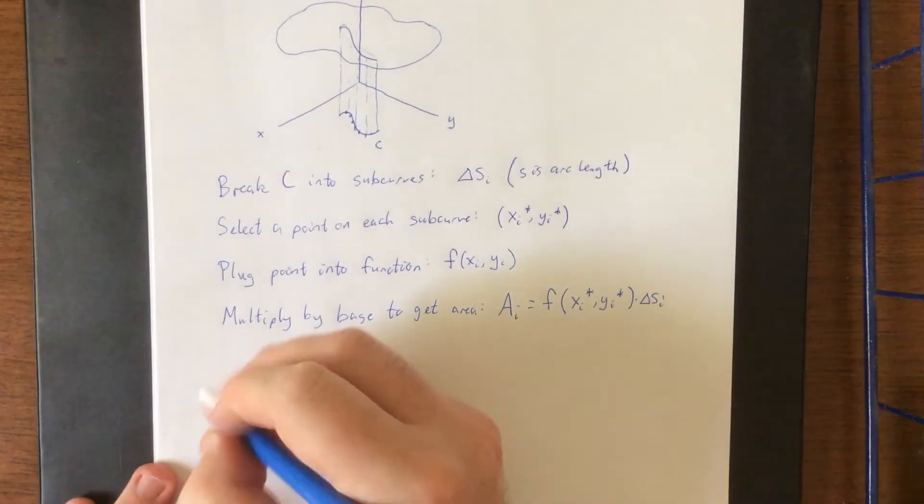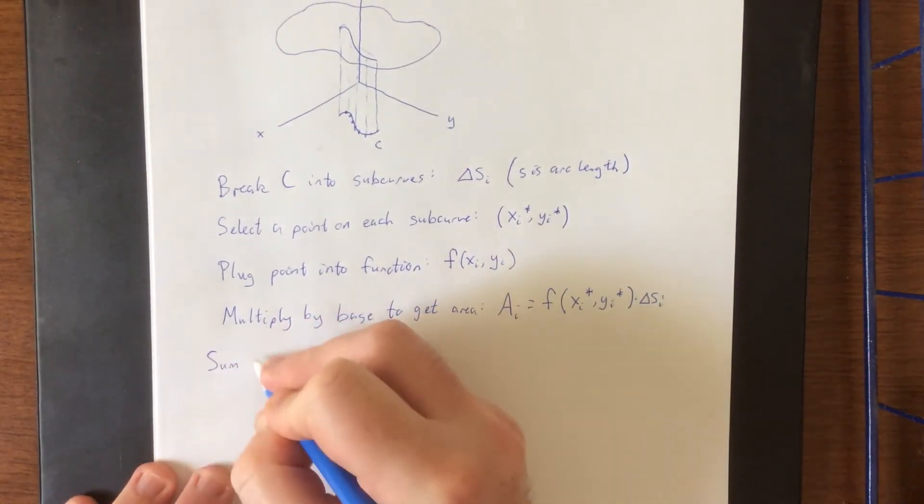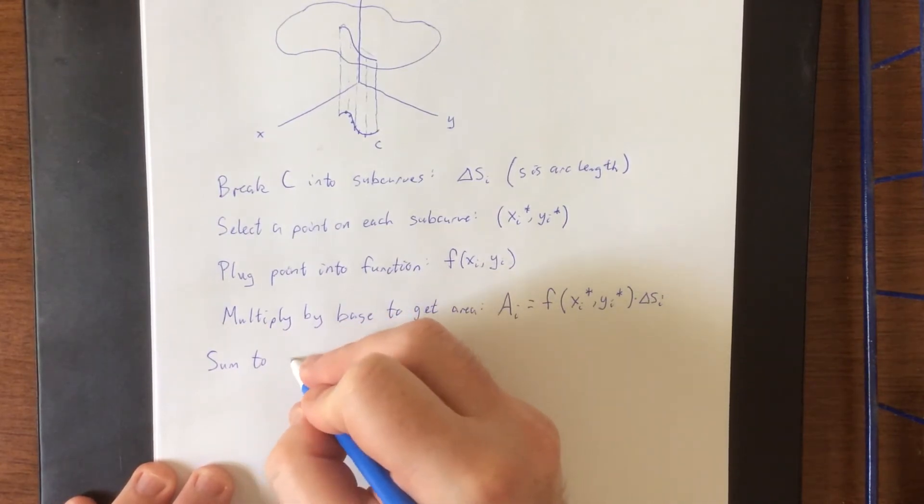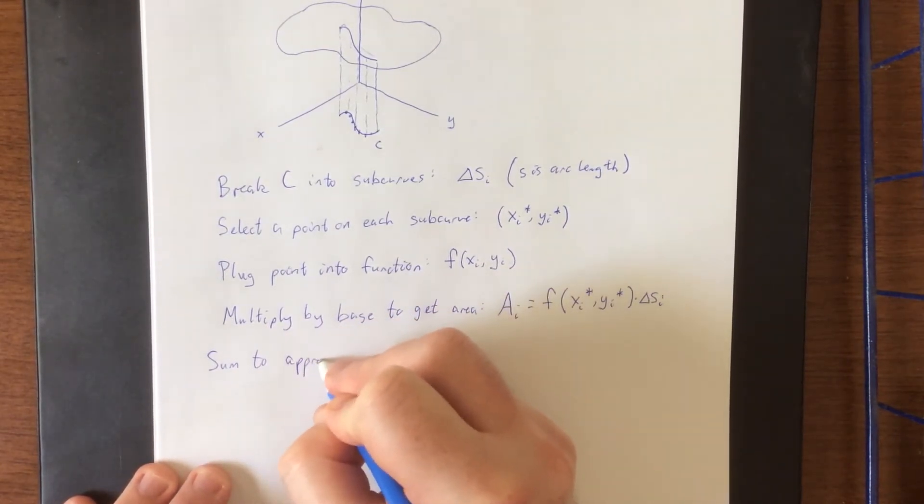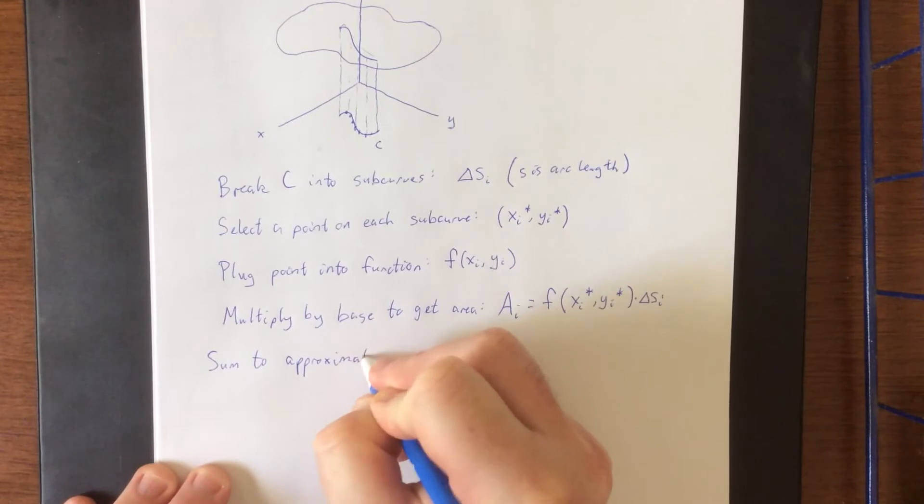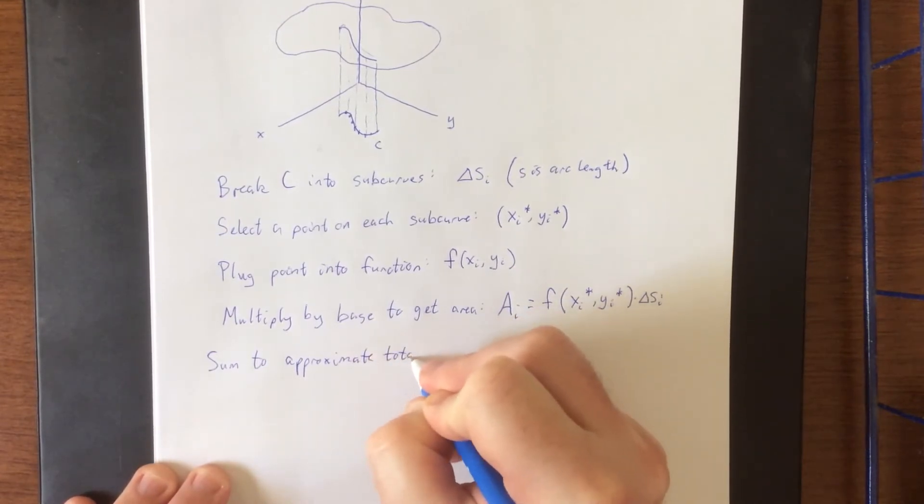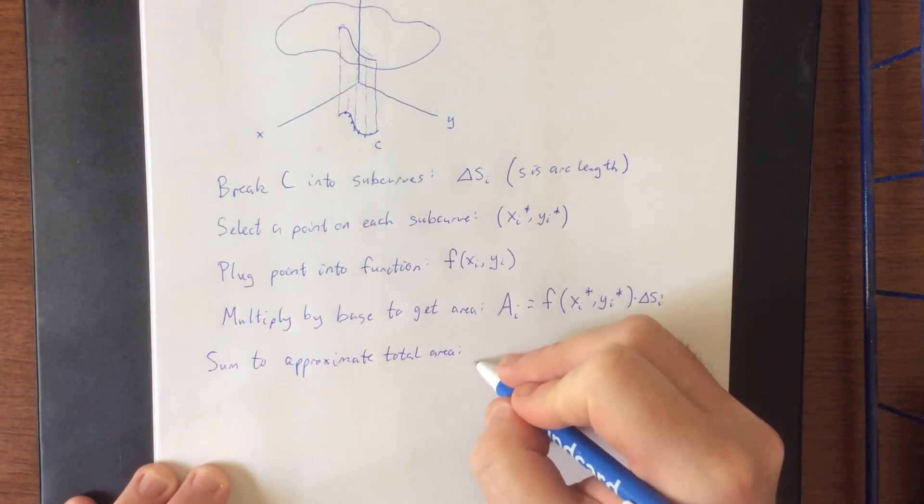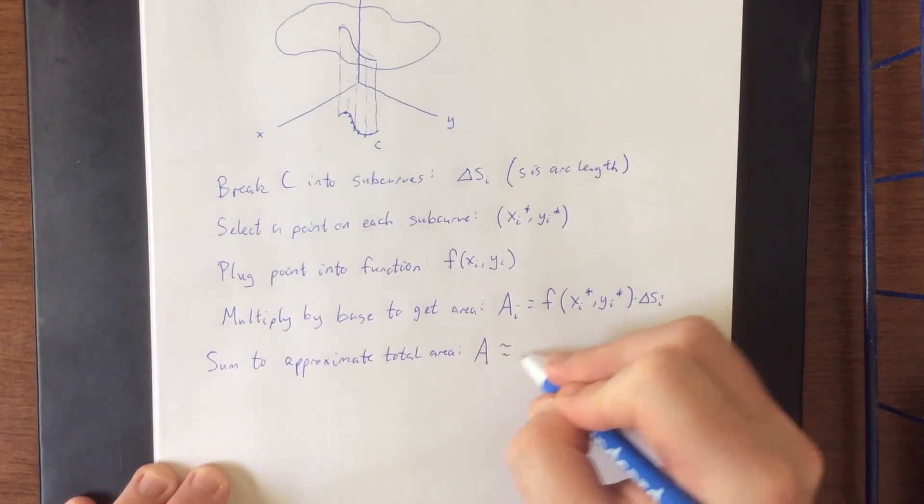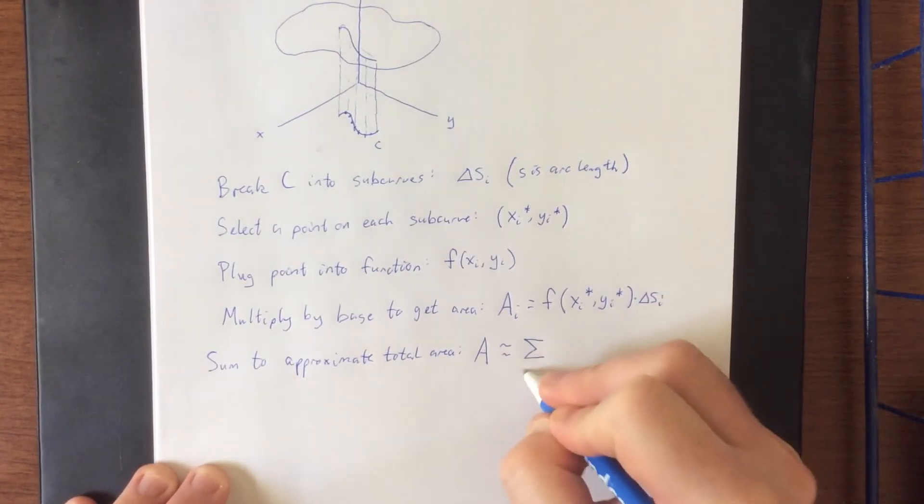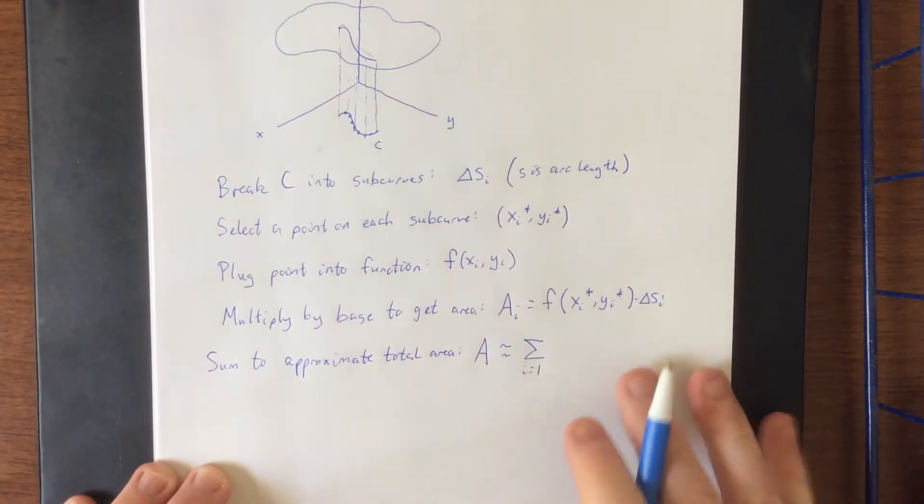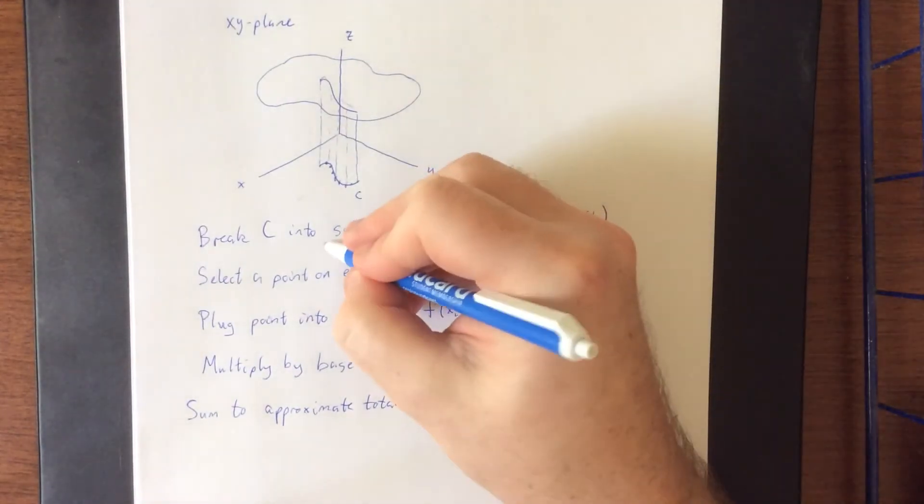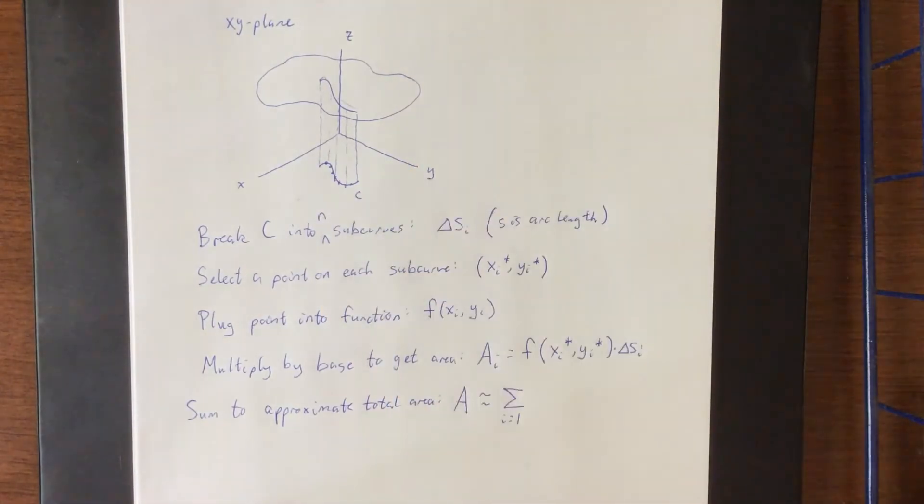So we'll say that each of those areas is going to be equal to f of that point that we selected times however long that individual sub curve is. Next we're going to add them all up. We will sum to approximate the total area. So the total area will be approximately equal to the sum as i goes from 1 to, I guess I never really specified back here but we'll call it n...